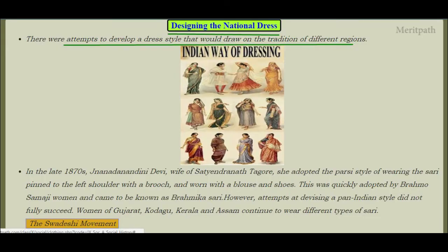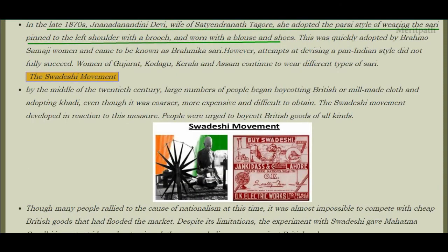There were attempts to develop a dress style that would draw from the traditions of different religions. In the late 1870s, Jananandini Devi, wife of Satyandranath Tagore, adopted the Parsi style of wearing the saree — pinned to the left shoulder with a brooch and worn with a blouse and shoes. This style was quickly adopted by Brahmo Samaji women and came to be known as the Brahmika saree.